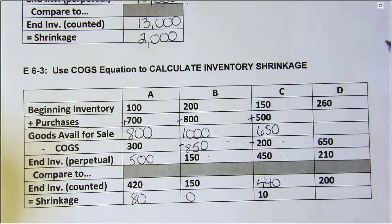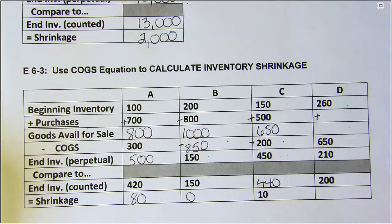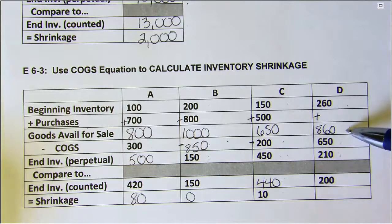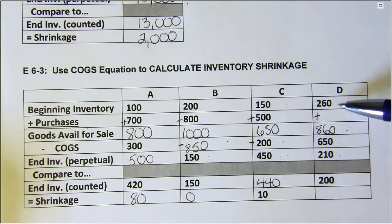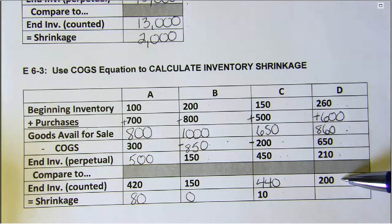Case D: We start with $260 of merchandise on hand. They don't tell us what we bought or what we have available for sale, but they tell us two things: we have $210 left and we sold $650 worth. If we add those two numbers together — $650 plus $210 — we get $860 worth of goods available for sale. We can calculate purchases by going backwards: $260 beginning inventory plus something equals $860, so our purchases must be $600. Now for shrinkage: our perpetual records say we should have $210 on hand, but when we count it we only have $200, so we have a $10 loss due to inventory shrinkage.